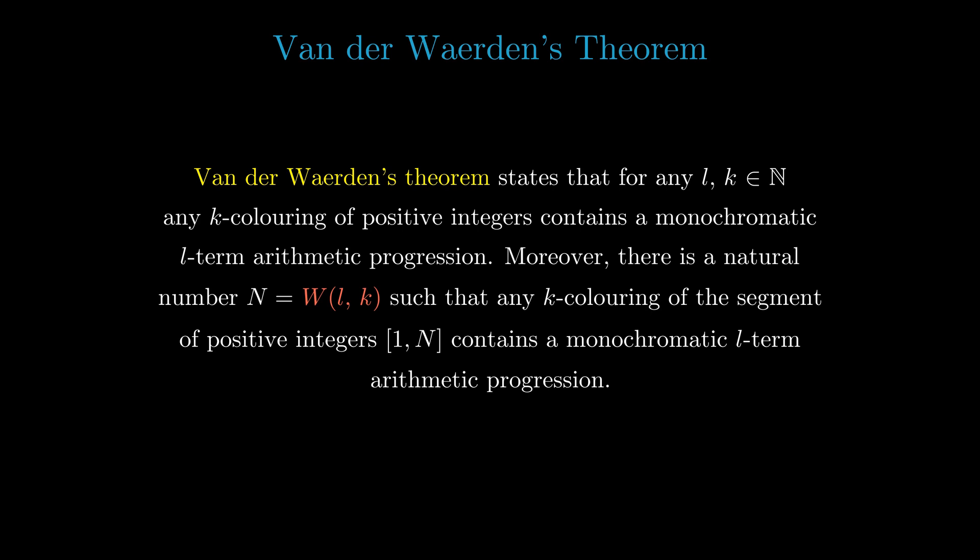Moreover, there is a natural number N = W(l, k) such that any k-coloring of the segment of positive integers [1, N] contains a monochromatic l-term arithmetic progression.